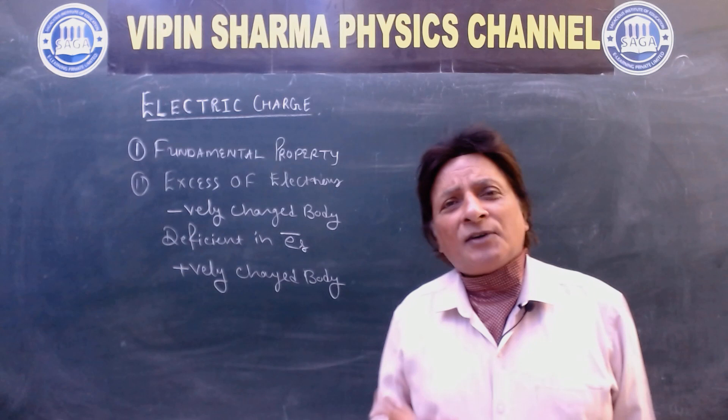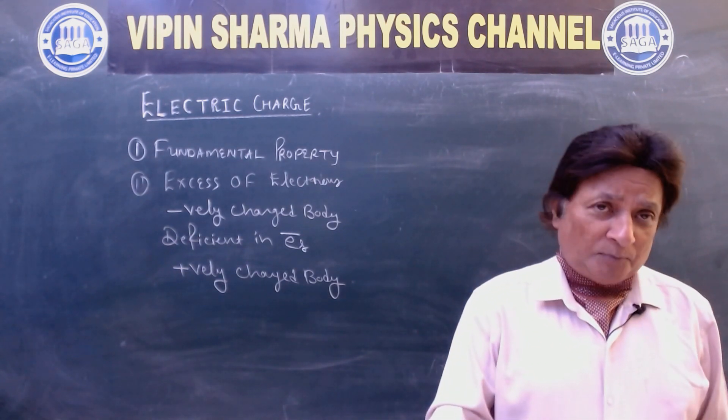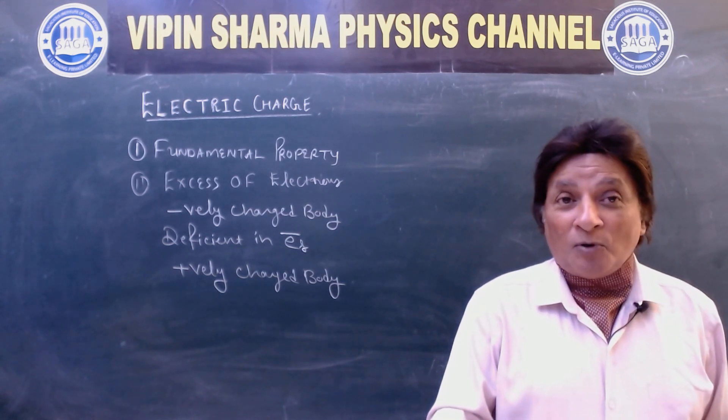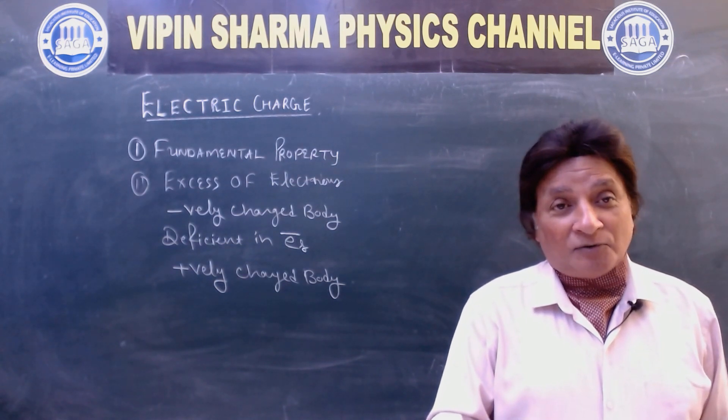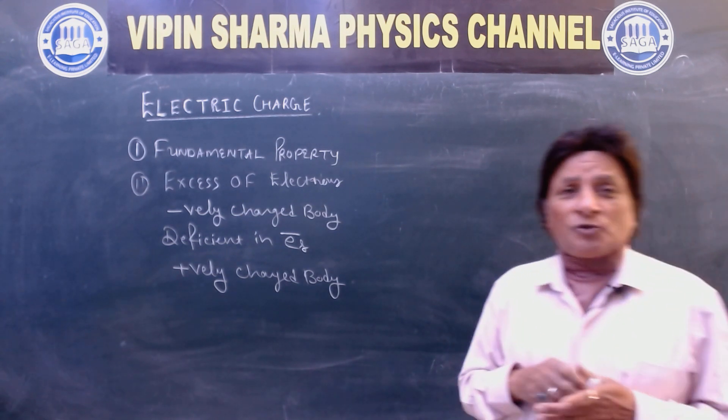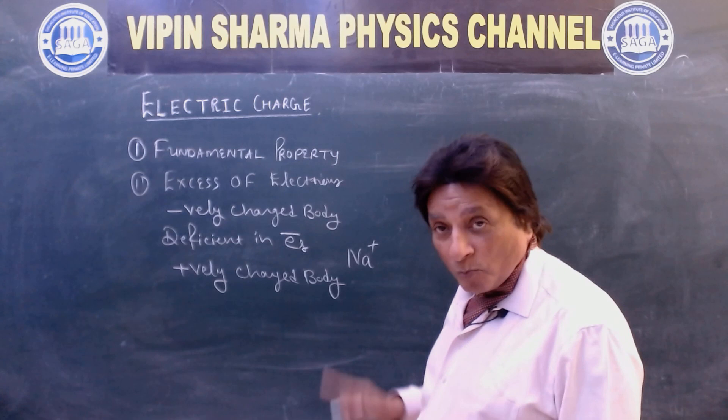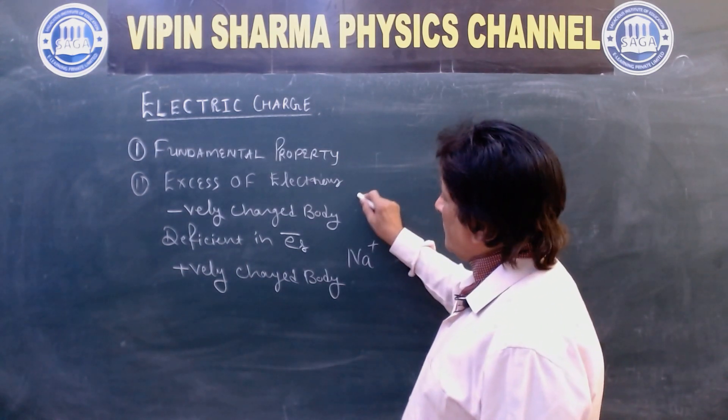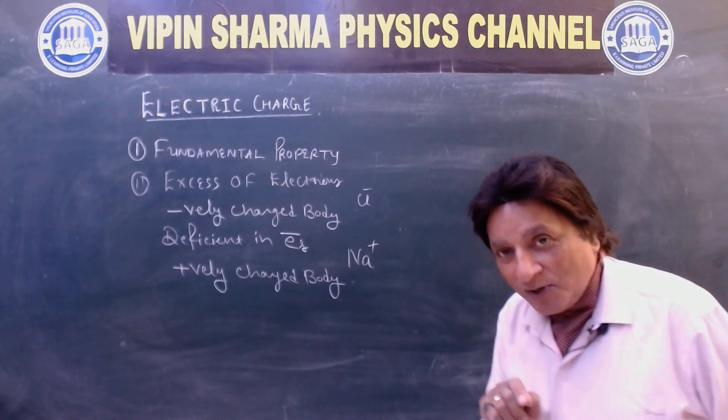What is charge? It is a fundamental property of matter. If excess of electrons are on a body, then it will be negatively charged. Or if deficient in electrons, it will be positively charged. Like sodium, sodium is deficient in one electron, Na+ positively charged. Chlorine has excess electron, Cl- negatively charged. Hope it is clear.